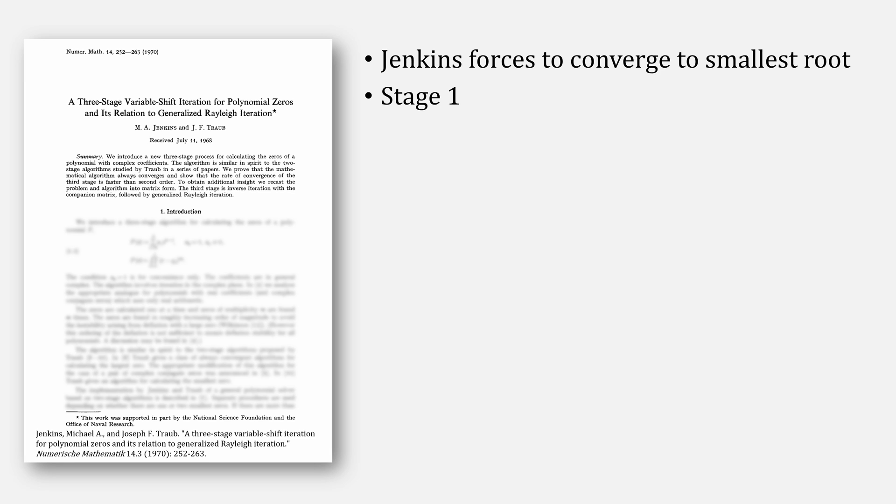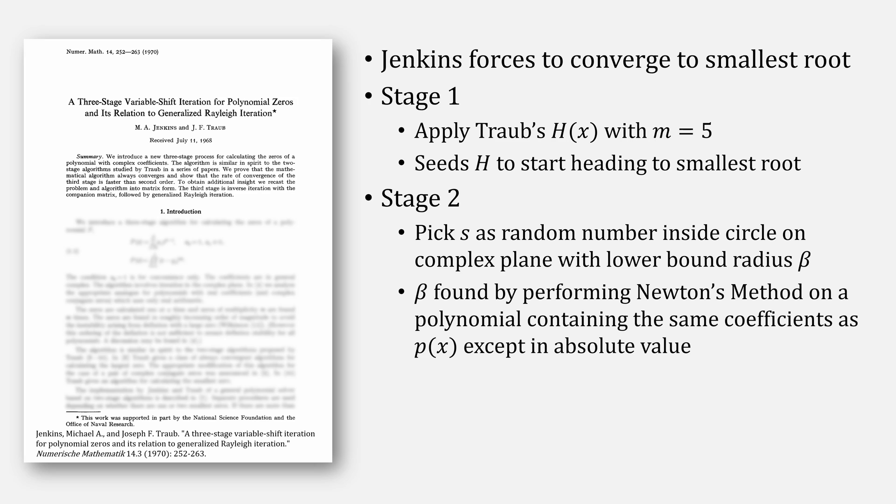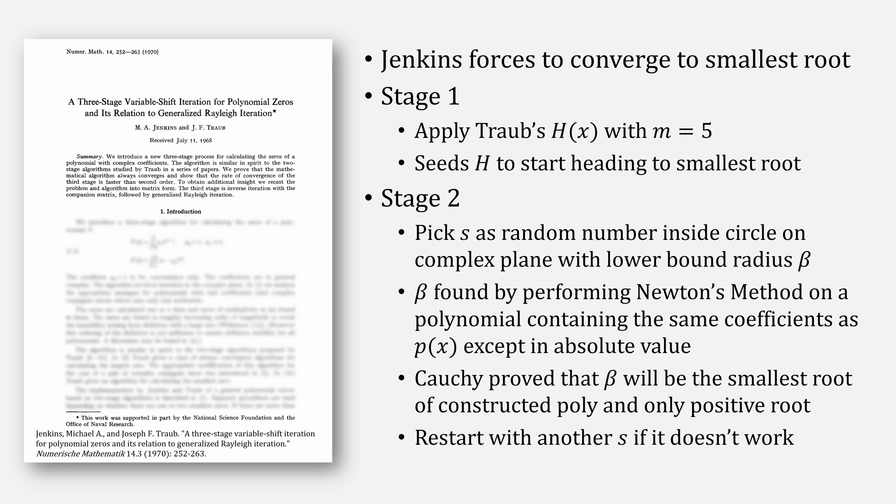Our first stage of the three-stage process is to actually apply Traub's h equation for a few iterations, seeding it to start heading to our smallest root. And then stage two actually starts with picking s as a random number inside of a circle in a complex plane with a lower bound radius of beta, where beta is found by performing Newton's method on a polynomial containing the same coefficients as the original polynomial, except each of them is now in absolute value. Cauchy proved that beta would be the smallest root of the constructed polynomial and the only positive value. Also, if for whatever reason this doesn't work, restart with another random s.